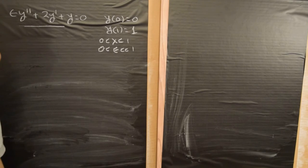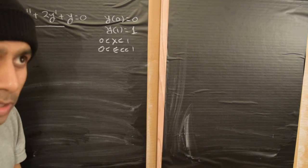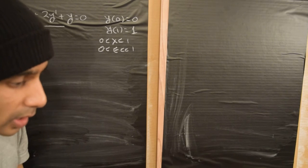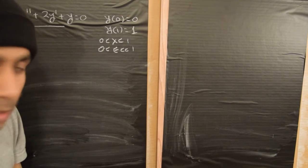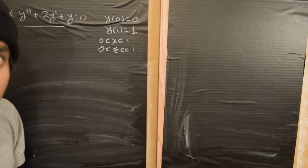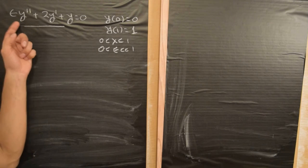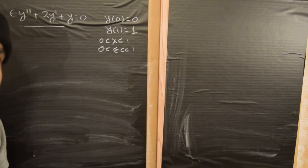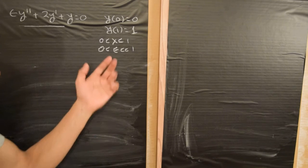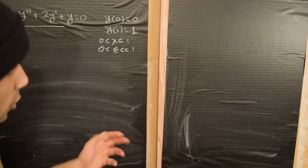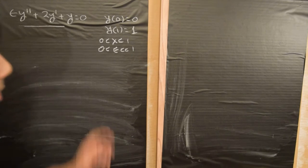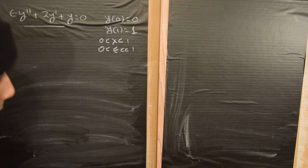Welcome back. In the previous video we introduced the WKB method, so now let's try and use that method to solve the equation we have been considering: epsilon y double prime plus 2y prime plus y equals zero, where y is the dependent variable. This equation has been suitably non-dimensionalized. x is a spatial variable going from zero to one, epsilon is the small parameter, and the boundary conditions are y at x equals zero is zero and y at x equals one is one.